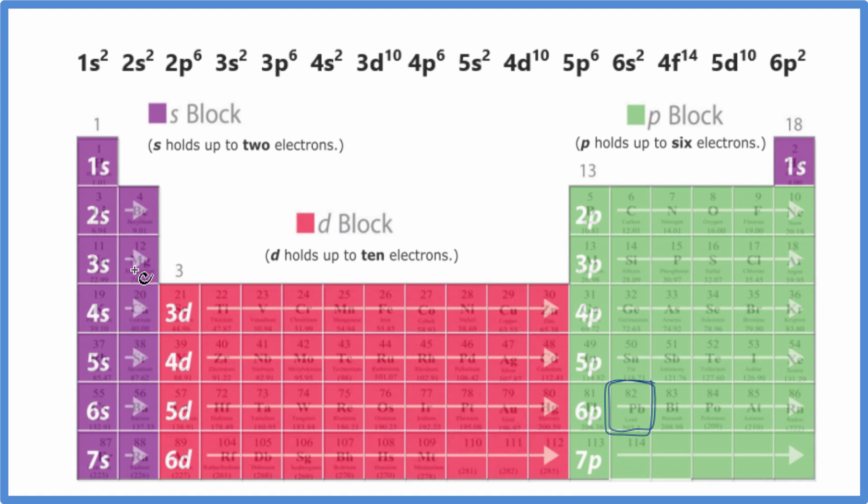So when we look at the configuration, the configuration for each of these elements ends in S1, S2, and then we have D1 all the way to D10, since D can hold 10 electrons. P, we have P1, P2, up to P6. We have six electrons here in the P block.